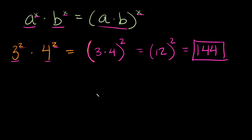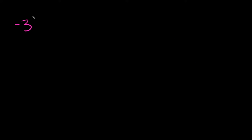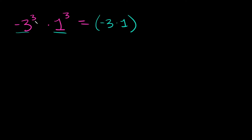Let's try another example: negative 3 cubed times 1 cubed. We multiply our bases together — negative 3 times 1 — and keep the same exponent, 3. Negative 3 times 1 equals negative 3, so we have negative 3 to the third power, which equals negative 27.